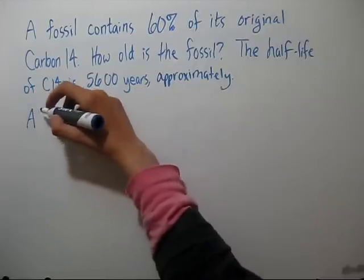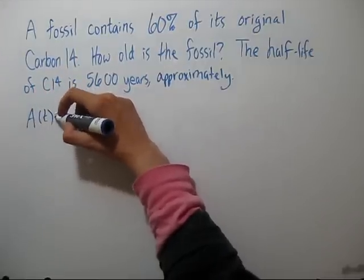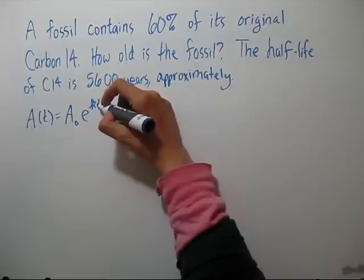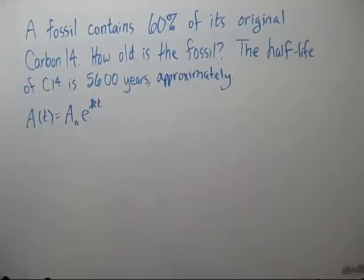So our equation is going to be A(t) equals A-naught e to the kt. Decay, so k is going to be negative.